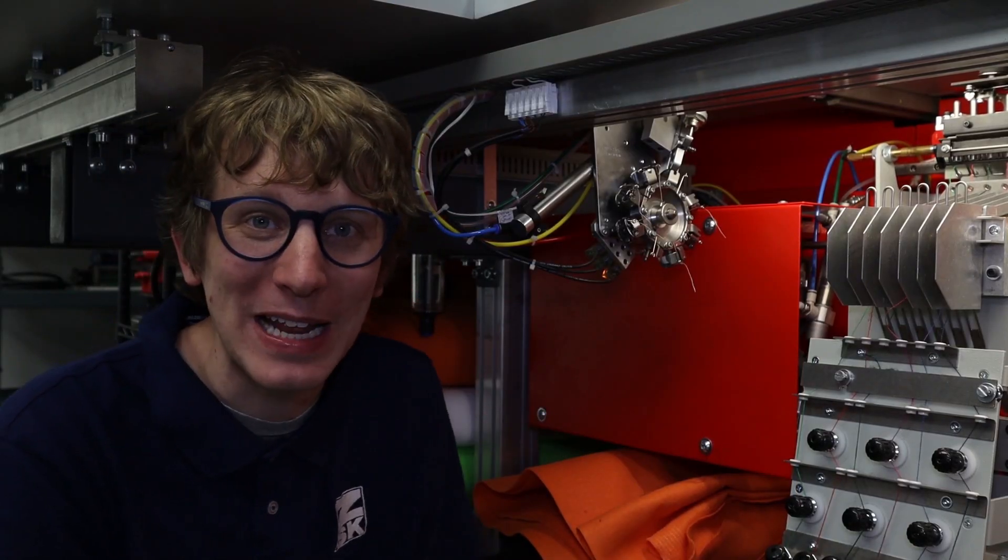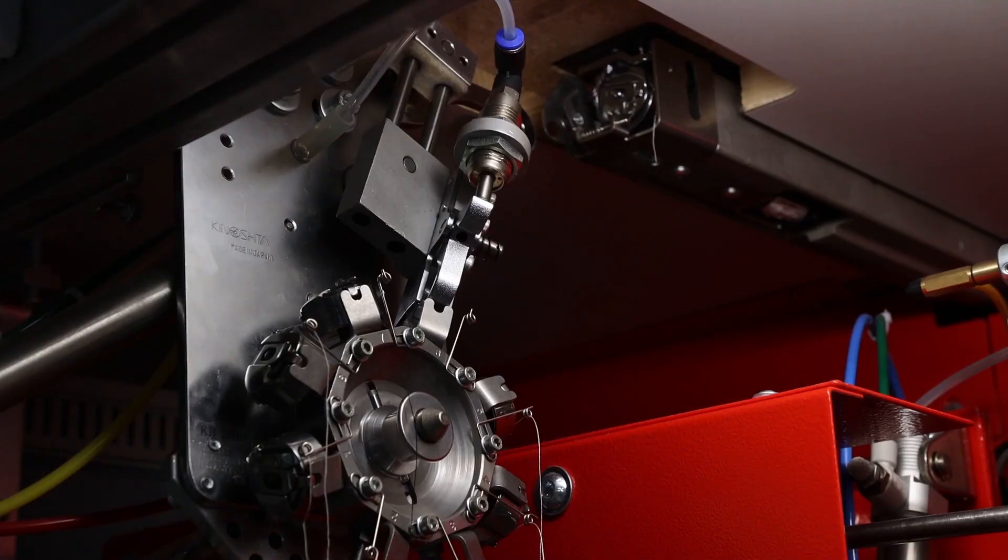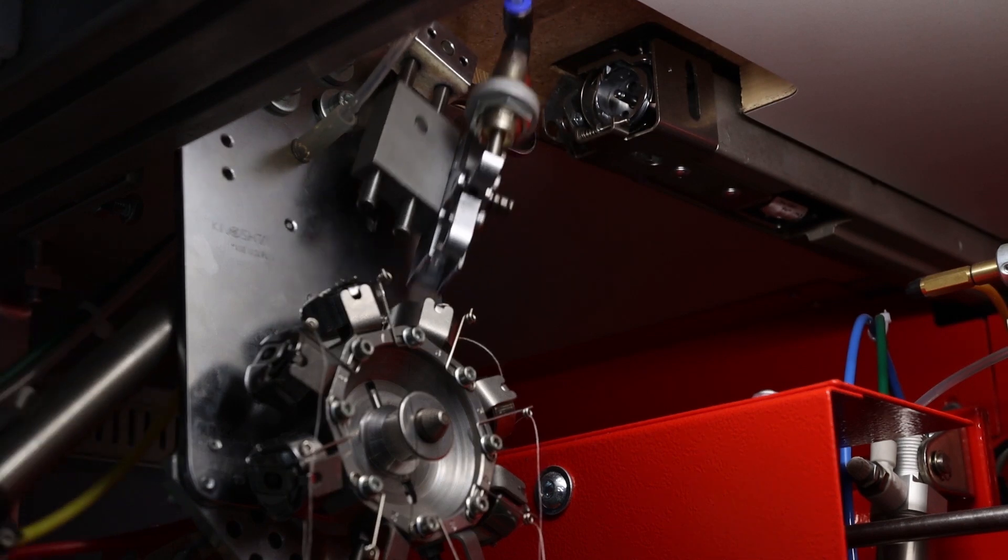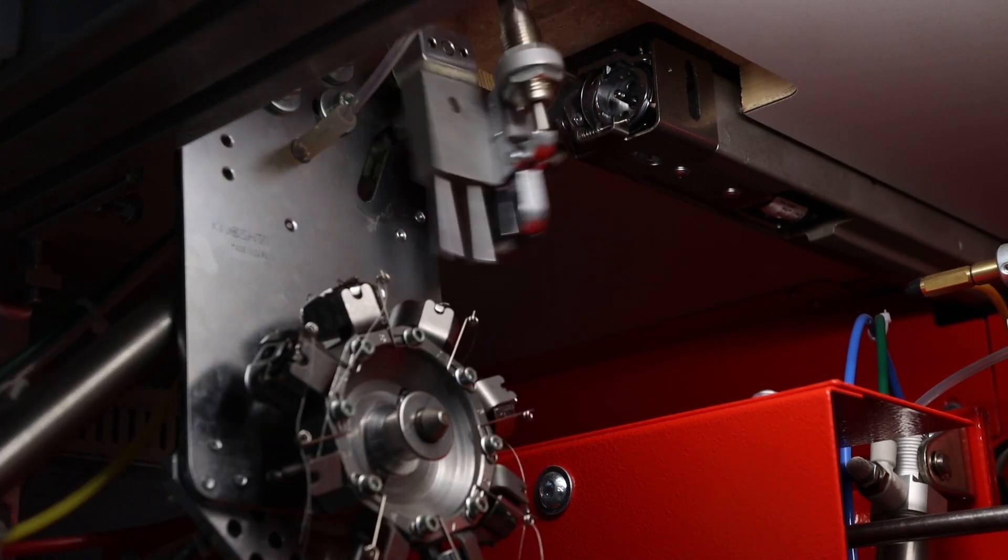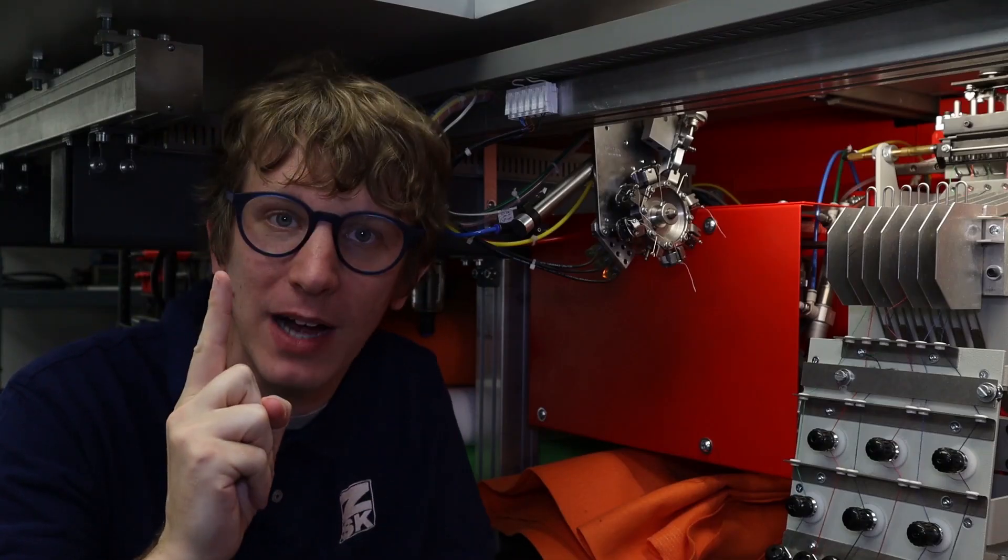And here we have an automatic bobbin changer. The automatic bobbin changer allows for the machine to replace its own bobbins, increasing the speed of embroidery and decreasing the operator usage.